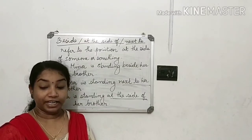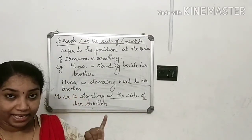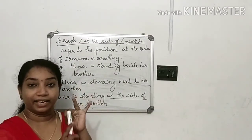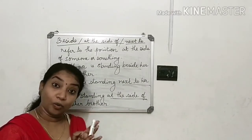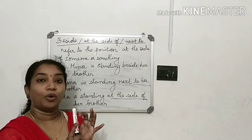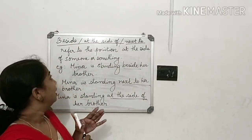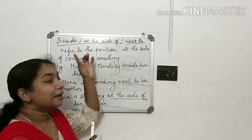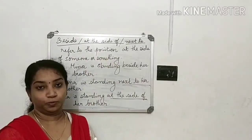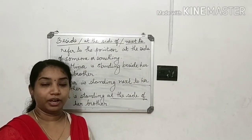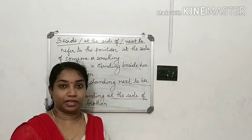So let's recap all the prepositions we have studied: 'at', 'near', 'around', 'over', 'above', 'beside', 'at the side of', and 'next to'. I hope you have understood all these prepositions and what each one means.